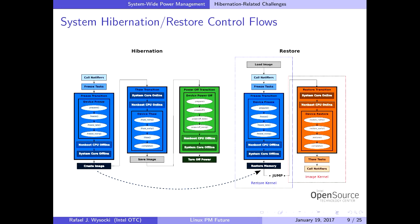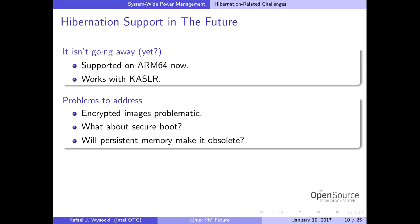Having two kernel instances is not very straightforward, which is why hibernation requires support at the architecture level. The jump from the restore kernel to the image kernel requires architecture support. Apart from that, no hardware support is required — it is essentially a checkpoint-restart mechanism. Some people thought hibernation would go away a couple of years ago, including myself, but that didn't happen and I don't think it's going to happen.